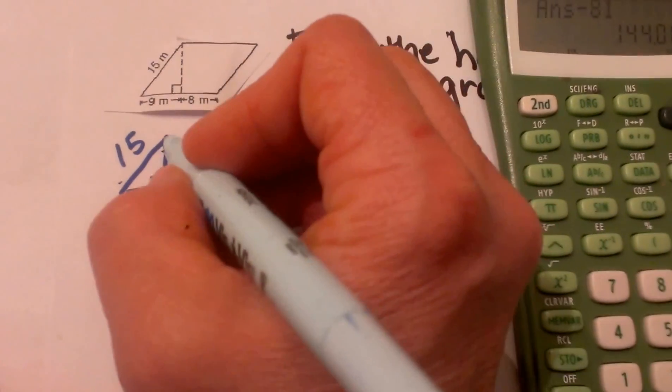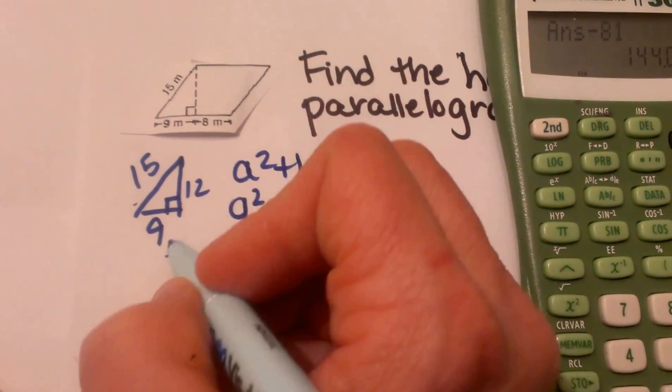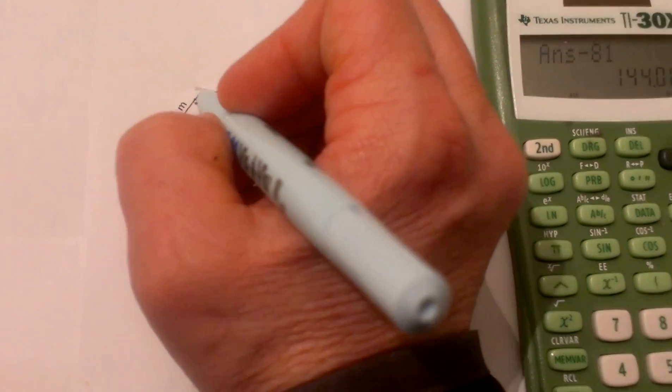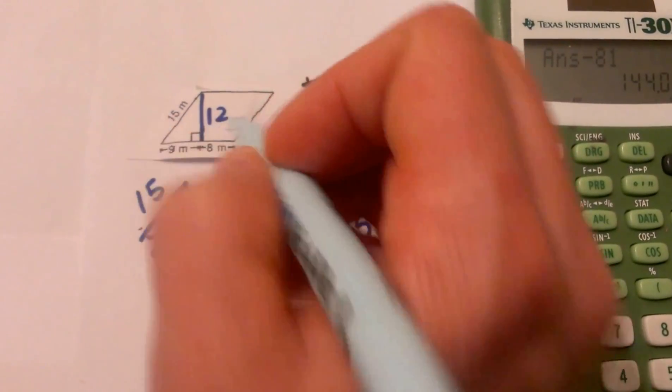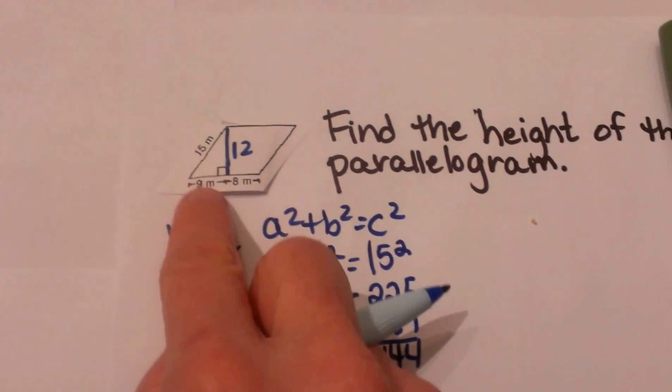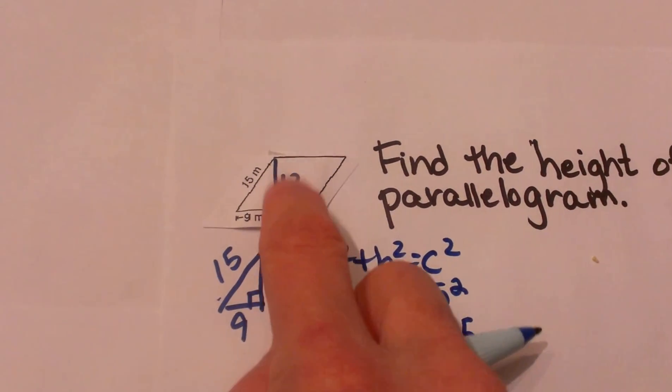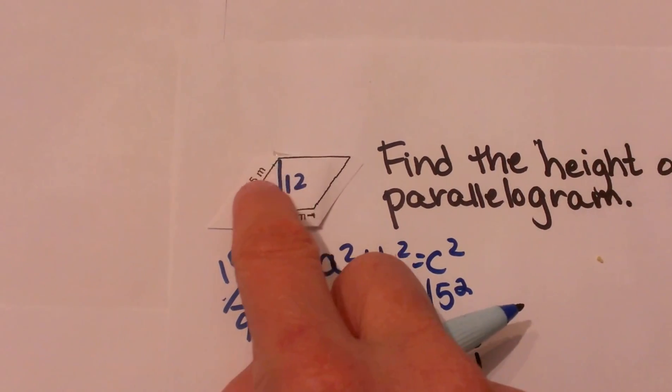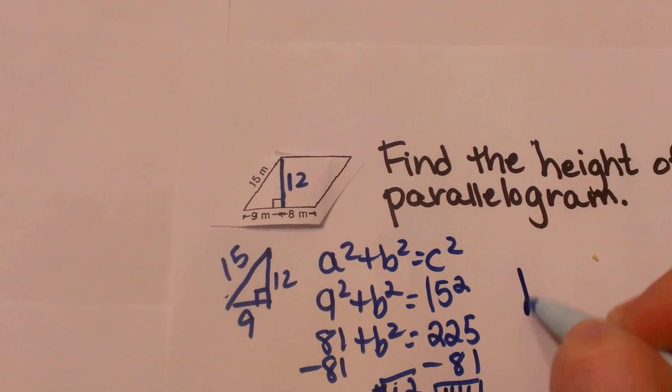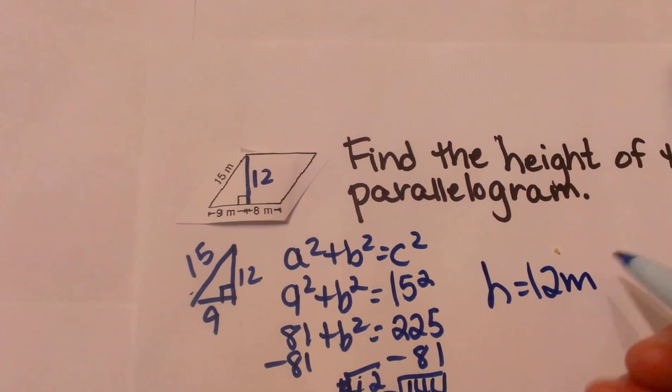So that is the height of this side of the triangle. Now let's transfer it back to our picture. It is also the height of the parallelogram. So we need to identify the units. This is 12 and what unit is it? It is in meters. So the height equals 12 meters.